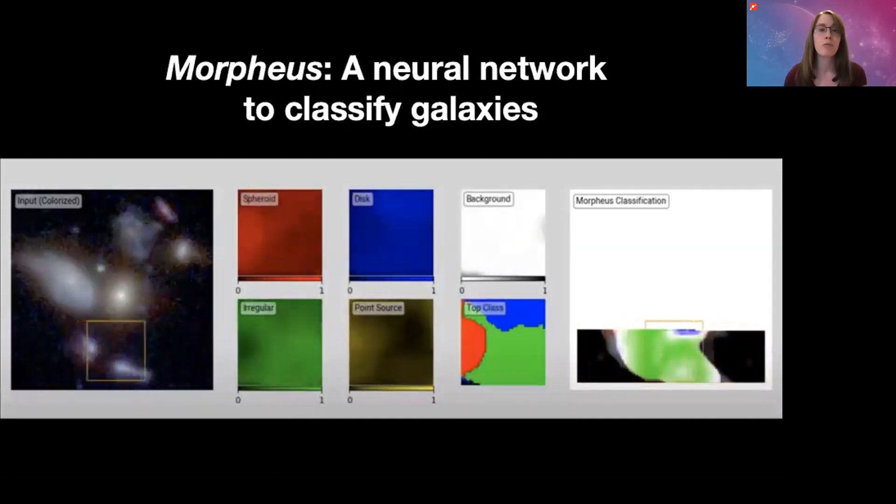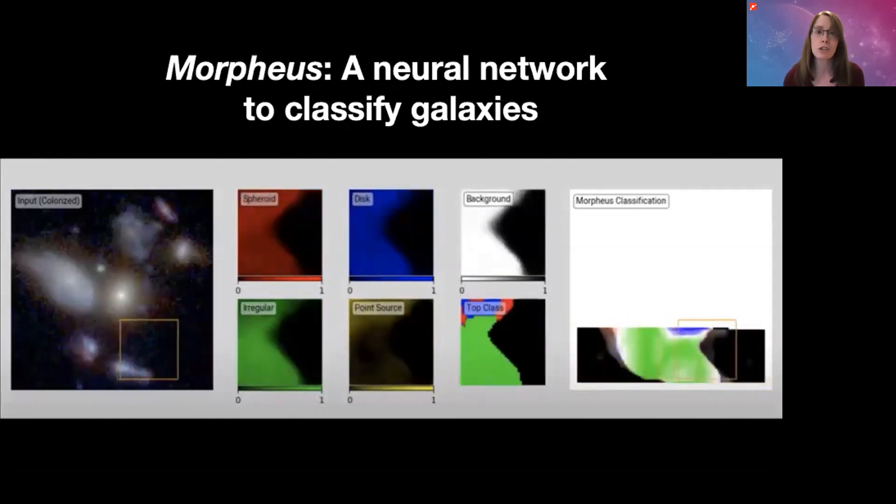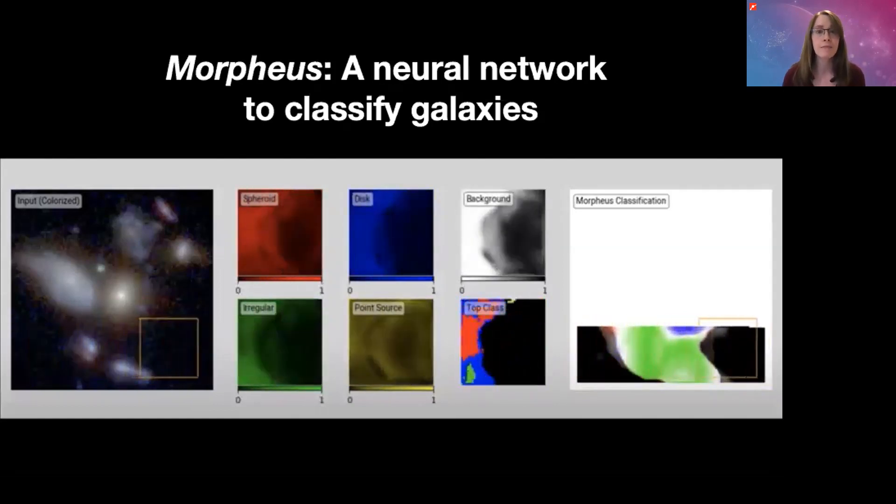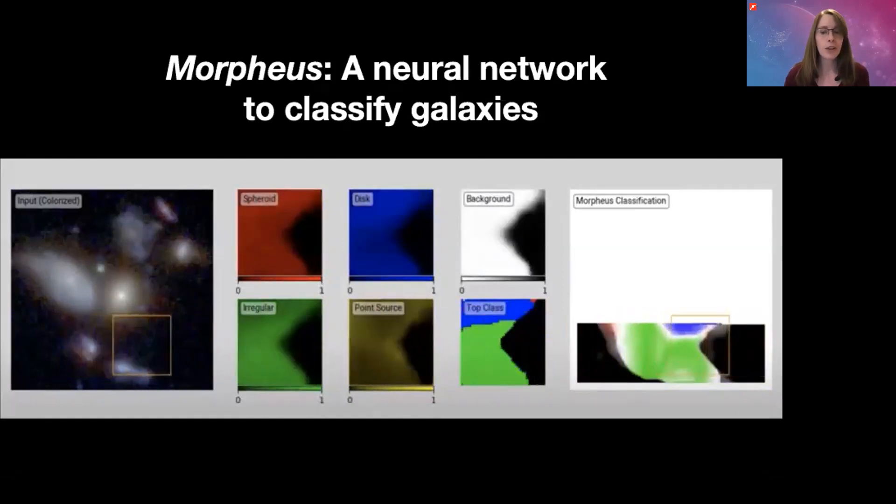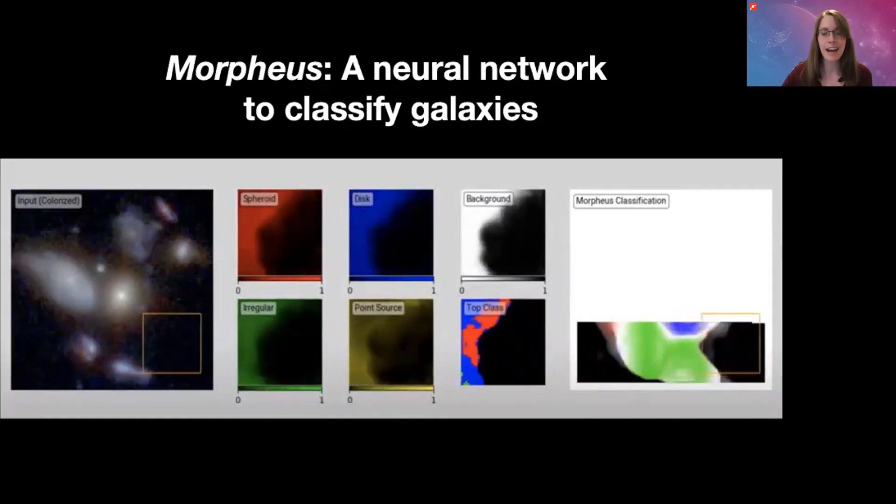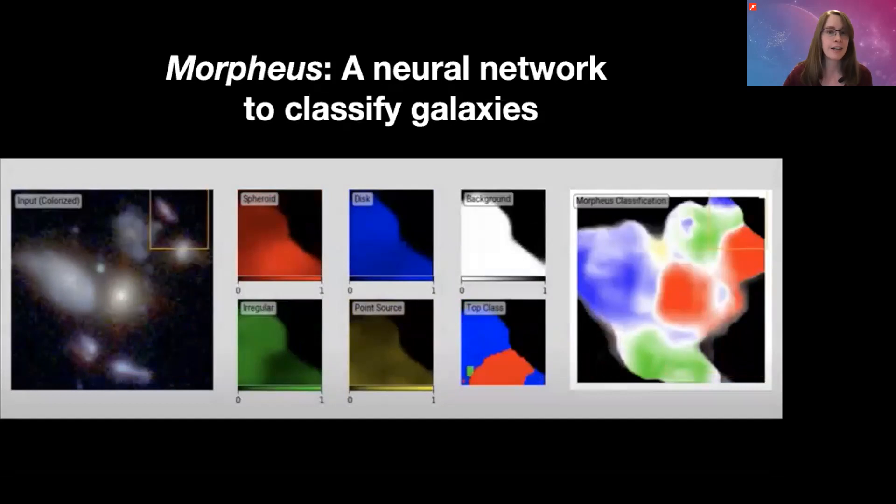So spheroid, disk, irregular galaxy, a point source or a star, or is it part of the background? And it runs for a little while so I'll skip to the end so you can see how Morpheus has filled in and classified all of the different blobs in this image.